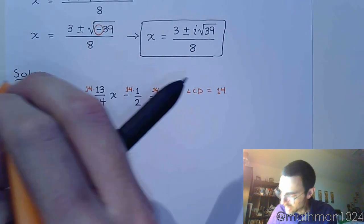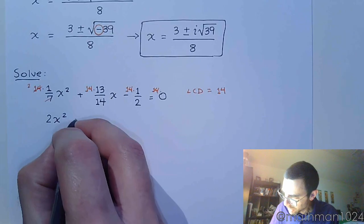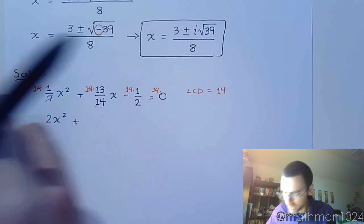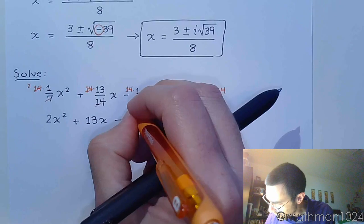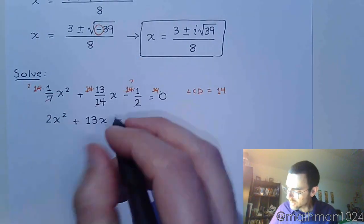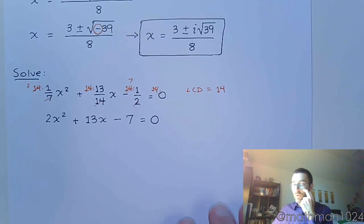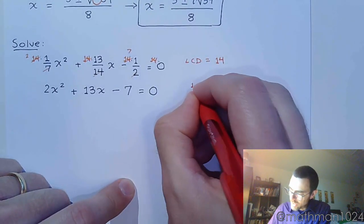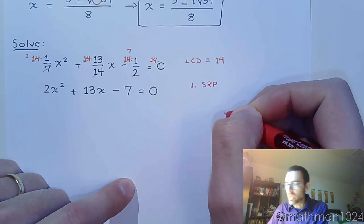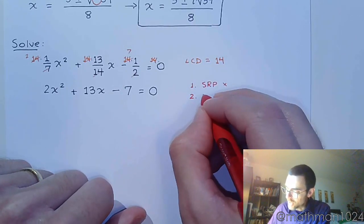All right, so at the very beginning, 7 goes into 14 twice. So I have 2x squared plus 14s reduce, and I have 13x minus. 2 goes into 14 seven times, and 14 times 0 is 0. So this is our quadratic equation now. And let's see if we can figure out what the best way is for solving this. All right, let's go to our progression. We're never going to go away from this. Number one, can I use the square root property? You have two terms that have x, so the answer is no.